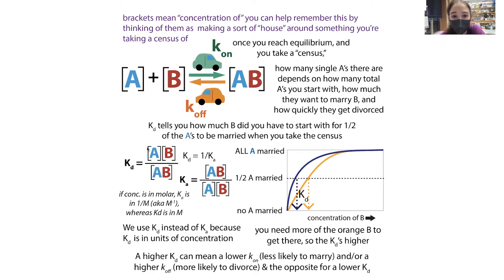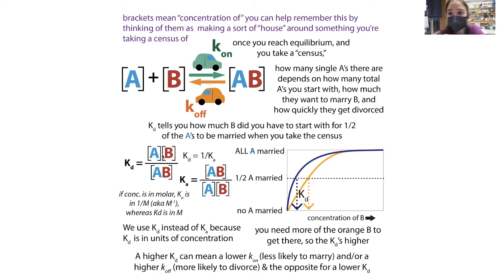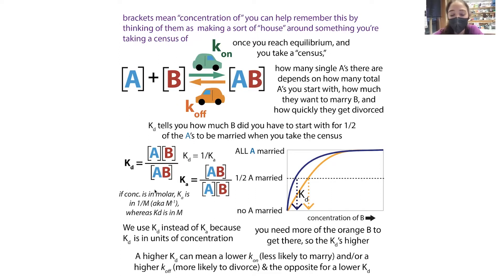If it was more complicated and you had stoichiometry, the law of mass action applies to all reversible reactions — not just binding, but also reactions where you have products and reactants. It's really helpful, and from it we get this idea of an equilibrium constant, or the Kd.